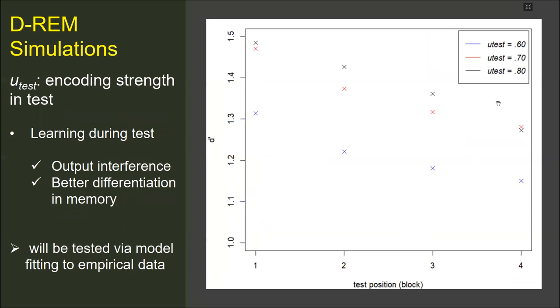In the previous studies using the REM model, the encoding strength in the test was generally different from the study's strength. This is related to the steep decrease in performance during a recognition test. In our simulations, increasing the encoding strength in the test resulted in an emphasized output interference. As the serial position of the test item increased, the sensitivity decreased, and the decrease in performance was steeper when the u test value was higher.